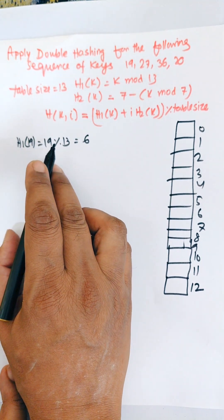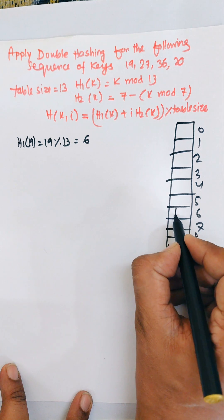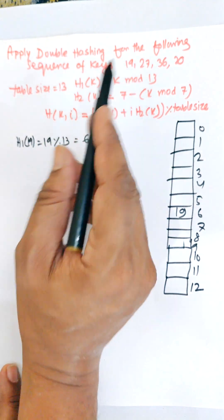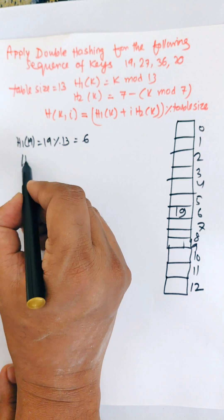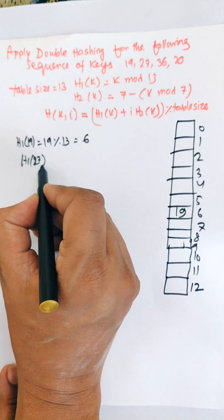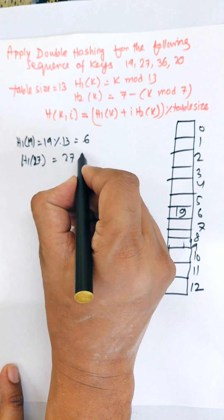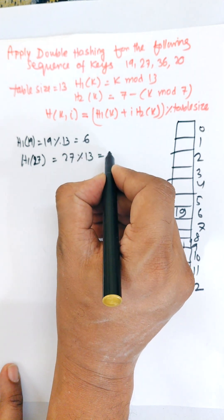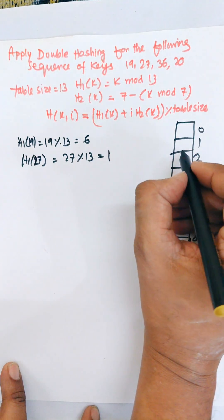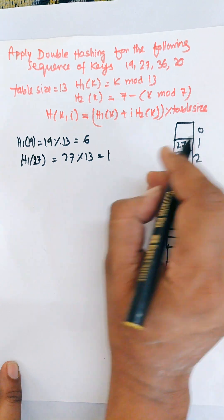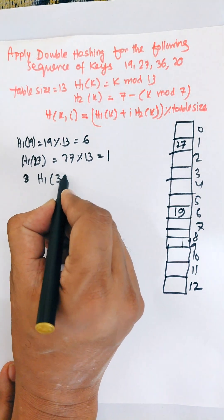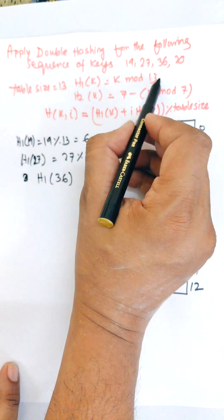So 19 is stored at location 6. Next, for key 27: h1(27) = 27 mod 13, the remainder is 1, so 27 is stored at location 1. Next is key 36 — we apply h1(36) first. If there is any collision, then we will apply the second hash function.